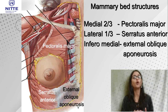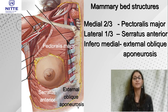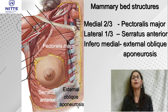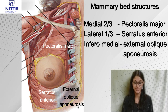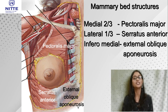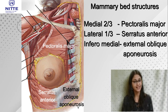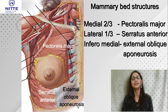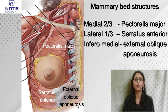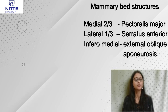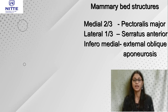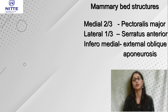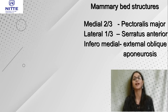The floor of the mammary gland is formed in the medial two-thirds by the pectoralis major muscle, the lateral one-third by the serratus anterior, and inferomedially by the external oblique aponeurosis. These three muscles form the mammary bed — the structures on which the mammary gland is resting.